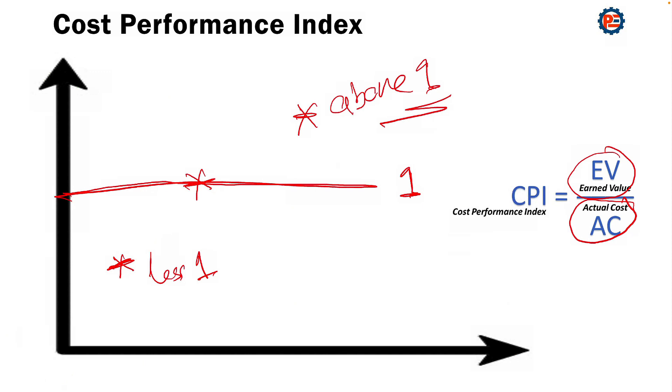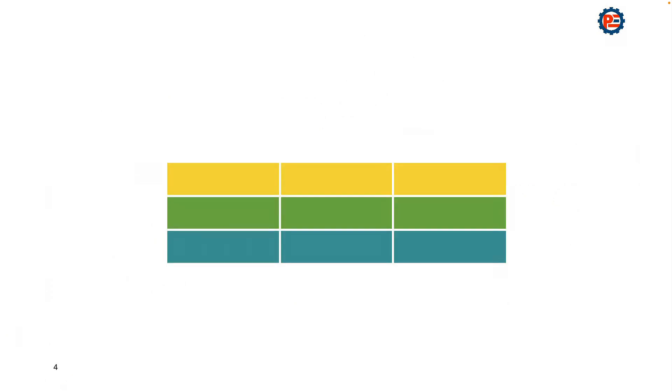If the CPI is less than one, it means we are over budget. If it is above one, it means we are below budget. You are going to see an example to tell us more about this one.